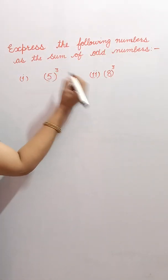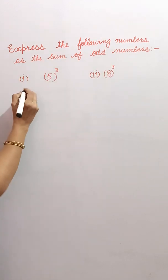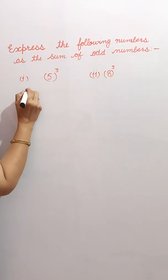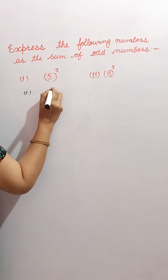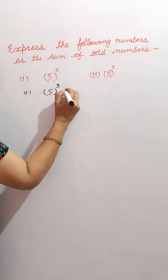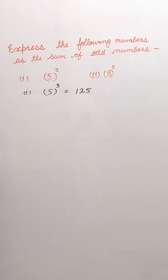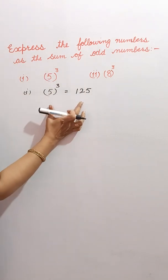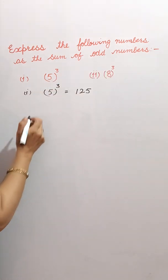First is 5 cube and this is 8 cube. This is 5 cube — it is equal to 125. Now, we have to show it as the sum of consecutive odd numbers.